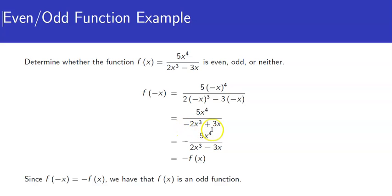Factoring a minus sign out of the denominator and moving it to the front of the fraction gives us negative of the fraction 5x to the 4th all over 2x cubed minus 3x.